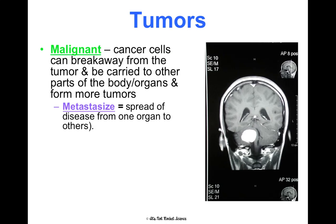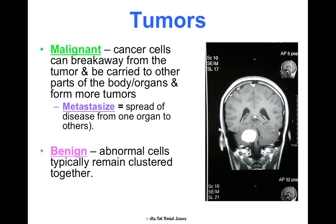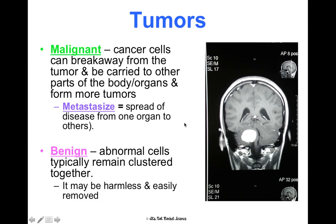A benign tumor is cells that are clumped together — for example, a brain tumor that's benign is just clumped together. It could be completely harmless and easily removed. But it can still be really terrible — this brain tumor, even though it's benign, is large, and extracting it could do significant damage to your brain. Benign tumors tend to be better if they're contained, but still not great because they can be really big tumors in really bad locations.